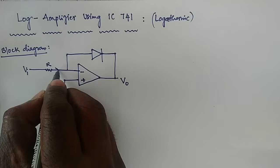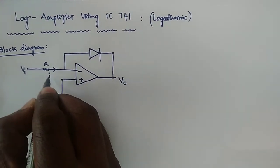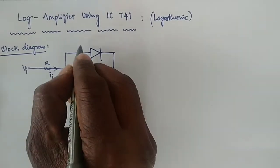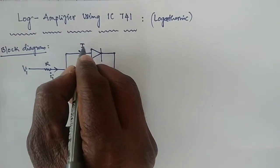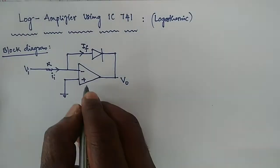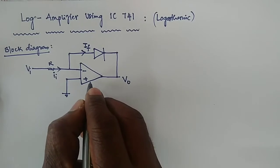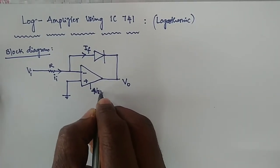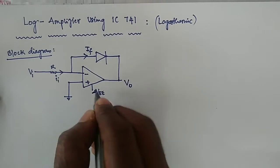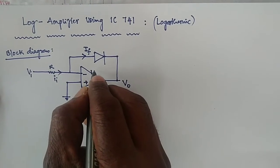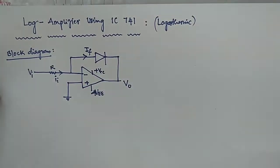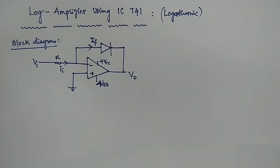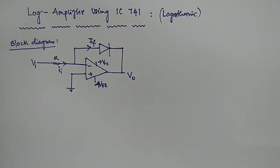In the input branch, the current is II — that is the input current. The diode current is IF, which is the feedback current. This is IC741: pin 4 is connected to minus VEE, and pin 7 is connected to plus VCC. This is the actual circuit diagram of the logarithmic operational amplifier.